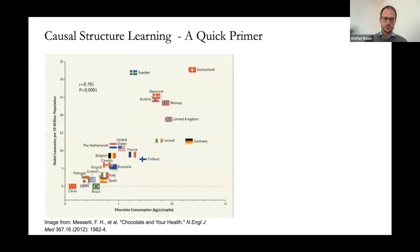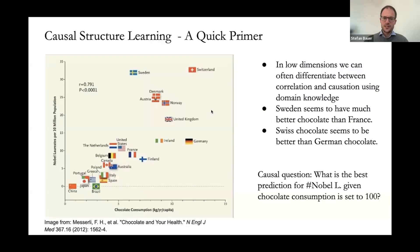For a quick primer on causality and causal structure learning: here we see the amount of chocolate consumption in kilograms per capita on the x-axis versus the number of Nobel laureates on the y-axis. Sweden seems to be a very positive outlier, which I would attribute to this amazingly nice research atmosphere I experienced at KTH and RISE — which motivates me to visit in person next time. Swiss chocolate seems to be much better than German chocolate, and overall there seems to be a strong linear correlation.